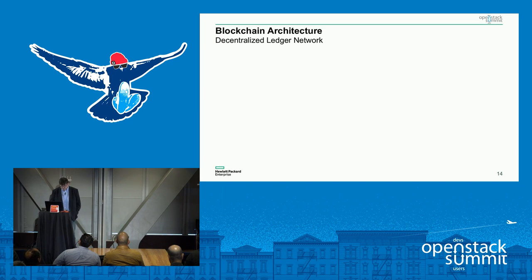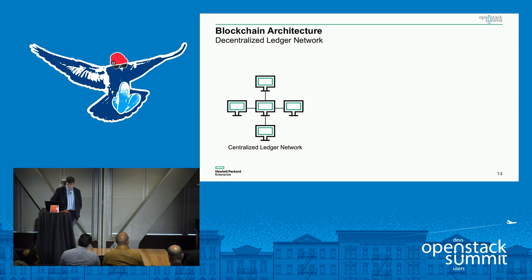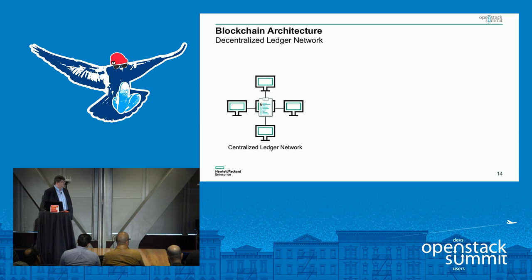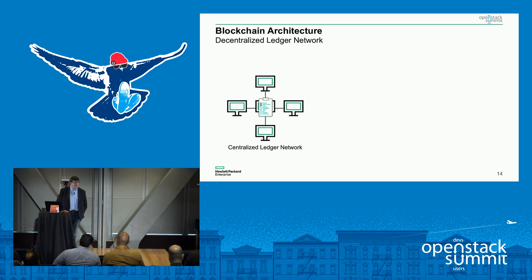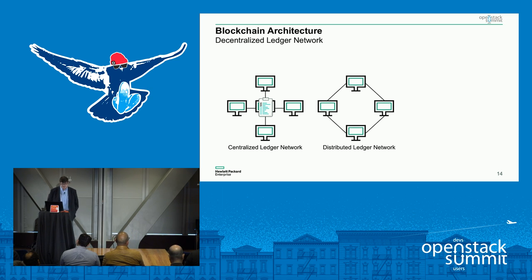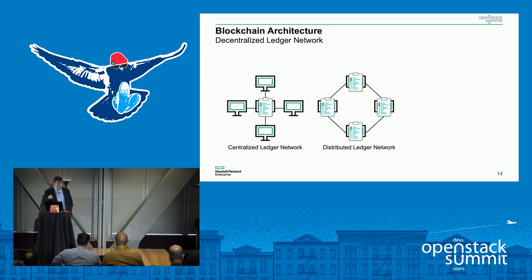Looking at architecture — it's a decentralized ledger network. What we're typically used to seeing is the centralized approach where a single ledger sits on one node with lots of clients connecting to it. That's been traditional banking architecture for a very long time. It means you have to protect that one node, and it's also a point that can be compromised fairly easily. The other approach is a distributed ledger network where a copy of the ledger sits on all nodes, requiring checksumming capabilities between nodes keeping exactly the same data updated almost synchronously.